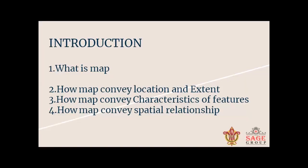What exactly is a map? We have already discussed that a map is a representation of an earth pattern. Mainly, what information does a map contain? Firstly, a map contains location and extent. Number two: characteristics of a particular feature — the exact characteristics of the particular feature whose location we have provided. And we can also represent the spatial relationship of a particular feature with respect to its area.